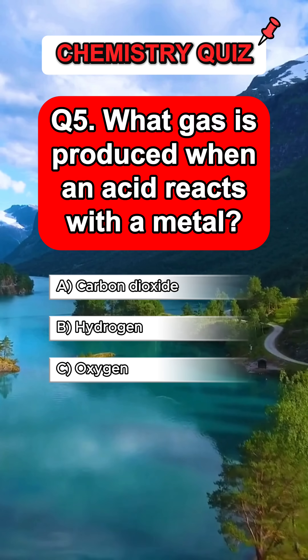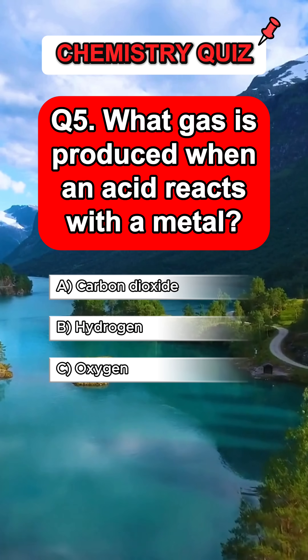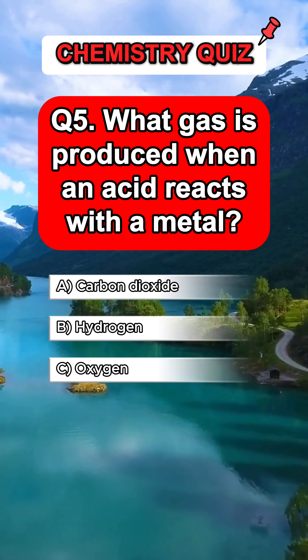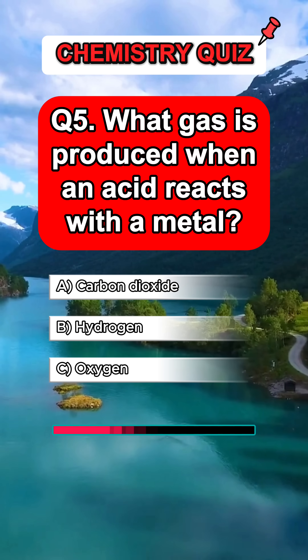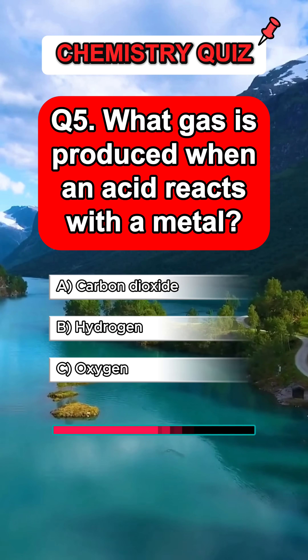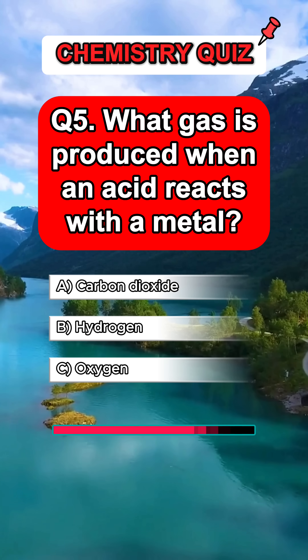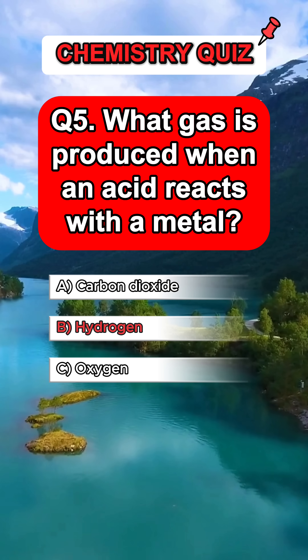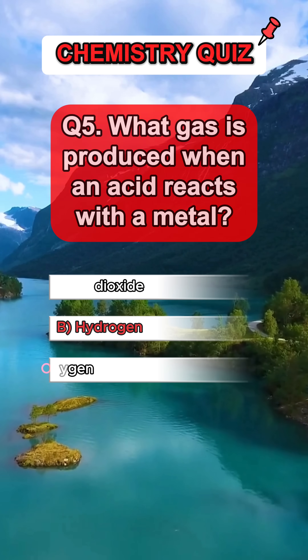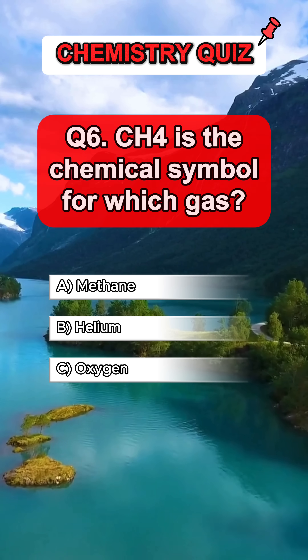Question 5. What gas is produced when an acid reacts with a metal? Answer B. Hydrogen.